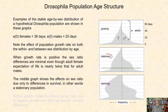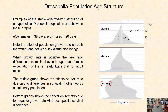The middle graph shows the effects on sex ratio due only to differences in survival — in other words, a stationary population. The bottom graph shows the effects on sex ratio due to negative growth rate and sex-specific survival differences.